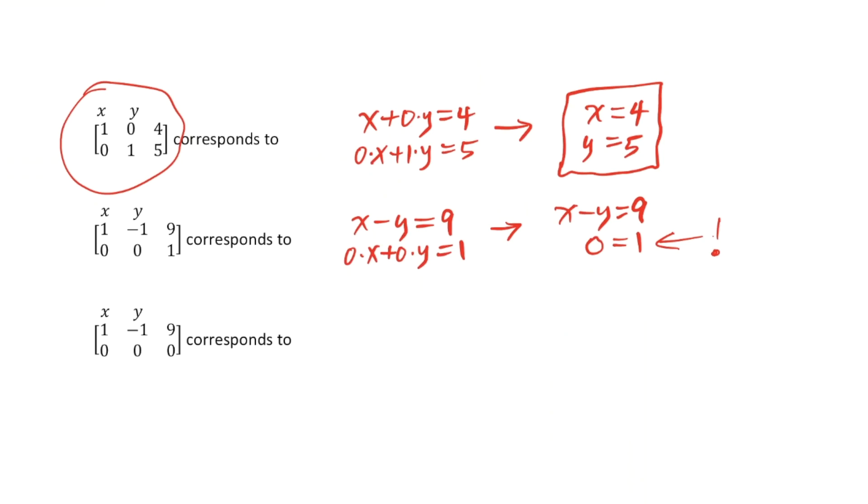Now let's look at the very last one here. It's similar to the one just above, but there's a fundamental difference here. The first row corresponds to x minus y equals 9. But the second equation corresponds to 0x plus 0y equals 0.